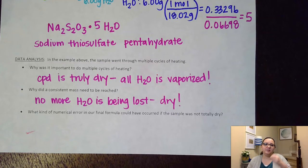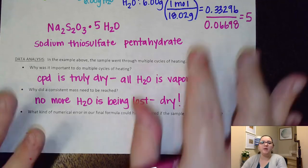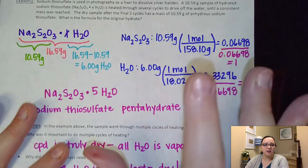If there were water still remaining in there, then that poses a problem. And that's where our next part of our question asks us here. It says, hey, what kind of numerical error in our final formula could have occurred if the sample was not totally dry? Well, let's go back and think about this for a minute in the context of our data.